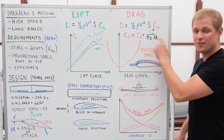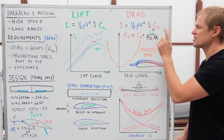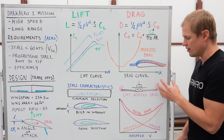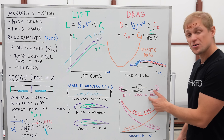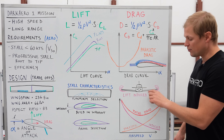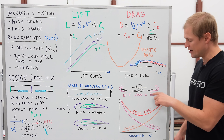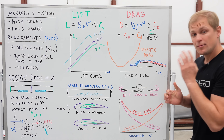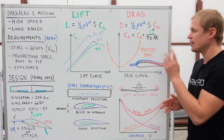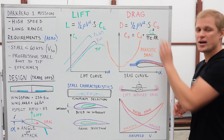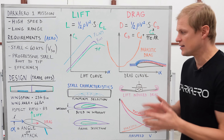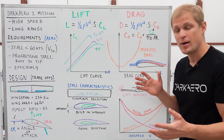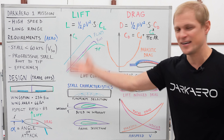The other drag component is lift-induced drag, which is proportional to the lift coefficient squared. It arises because the wing isn't perfectly efficient — high pressure on the bottom and low pressure on top causes air to curl around the wing tips, producing vortices that create induced drag. The main way to minimize lift-induced drag is by using a higher aspect ratio wing. The Dark Air 1 has an aspect ratio of 8.3, which we found to be a good balance between minimizing induced drag and fitting the wing in a two-car garage.